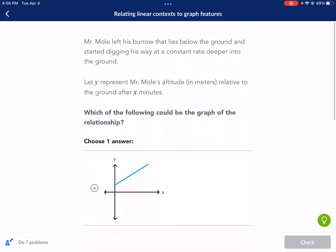So it says here, Mr. Mole left his burrow that lies below the ground and started digging his way at a constant rate deeper into the ground. Let y represent Mr. Mole's altitude in meters relative to the ground after x minutes. Which of the following could be the graph of the relationship? So, a couple key things it says here.